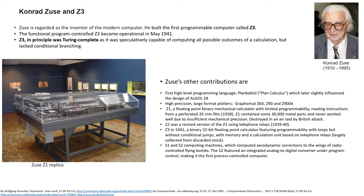Zuse also built S1 and S2 computing machines, which computed aerodynamics corrections to the wings of radio-controlled flying bombs. S2 had an additional feature of an integrated analog-to-digital converter under program control, making it the first process-controlled computer.